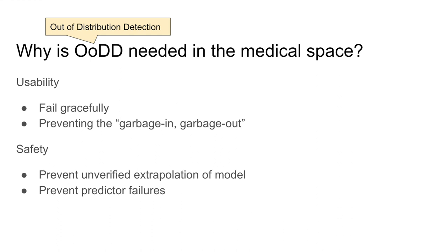The second reason is the requirement for safety. In applications like ML-assisted diagnosis, the performance of a system is directly tied to the safety of the patients. A well-documented failure mode is when a predictor attempts to extrapolate on inputs outside of the distribution it has been trained on. Out-of-distribution detection provides a safety mechanism that prevents failures of the predictor from harming the user through inaccurate predictions.